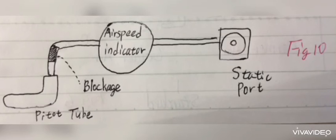If the ram air inlet and drain hole of the pitot tube are clogged, the air pressure is trapped in the line. The airspeed indicator no longer indicates changes in airspeed. Indicated airspeed increases when you climb, decreases when you descend.